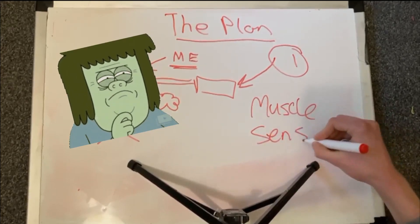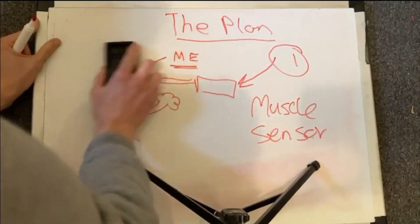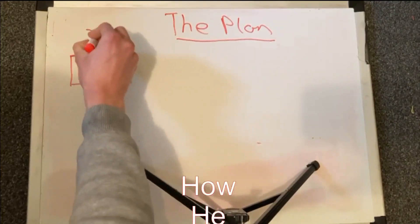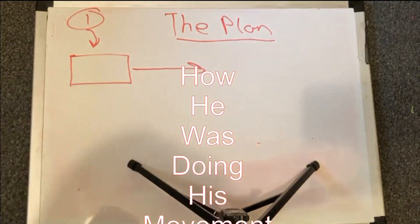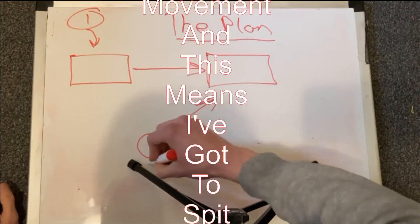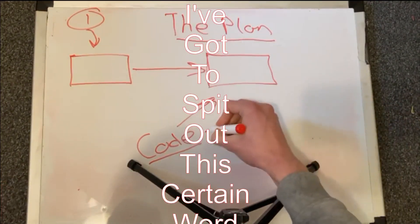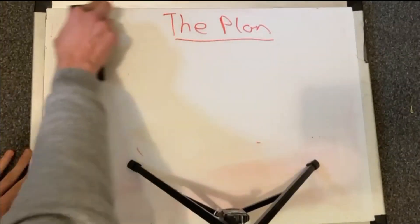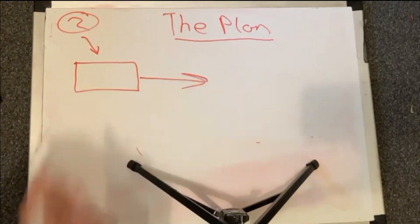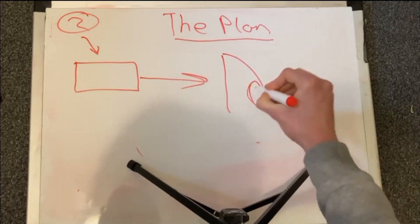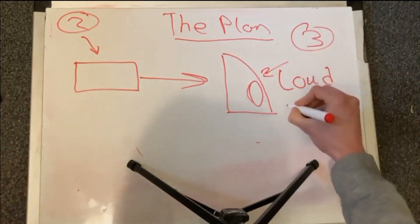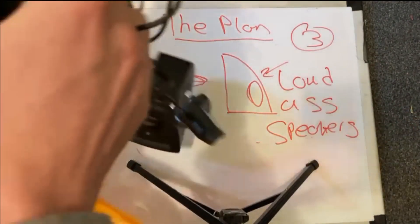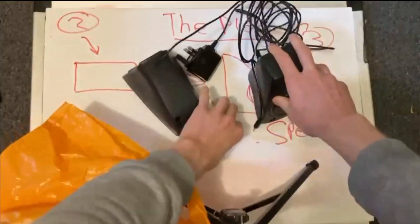Muscle man is going to make a gesture, and this gesture gets sent off to some artificial intelligence which figures out what movement he was doing. That means it can spit out a certain word. That word then gets thrown to some loud speakers — my third thing — effectively turning the movement I made into a vocal word that everybody can hear.